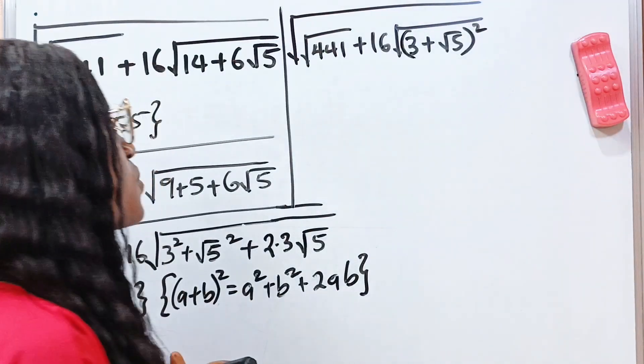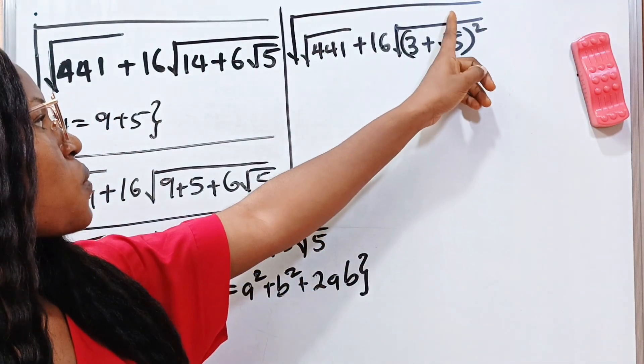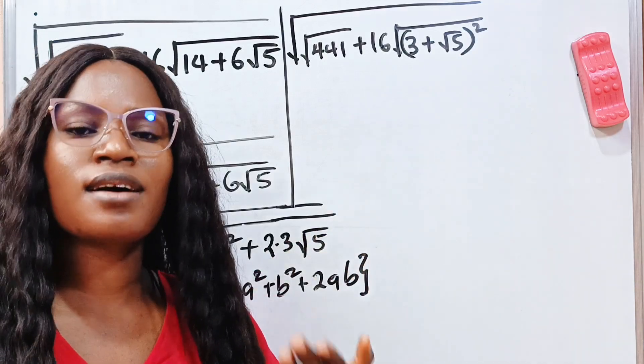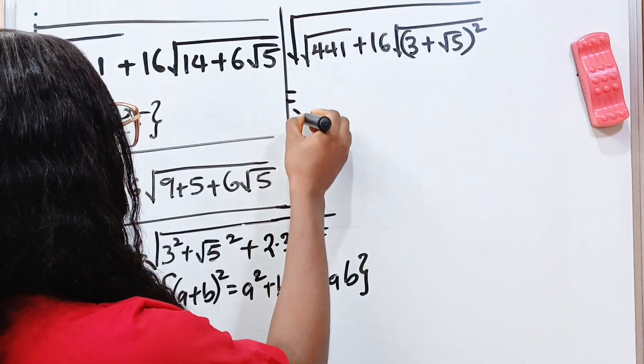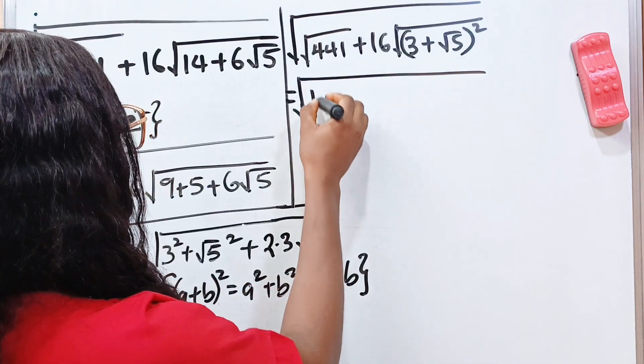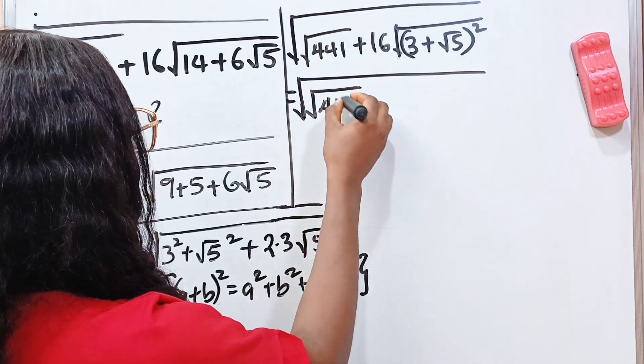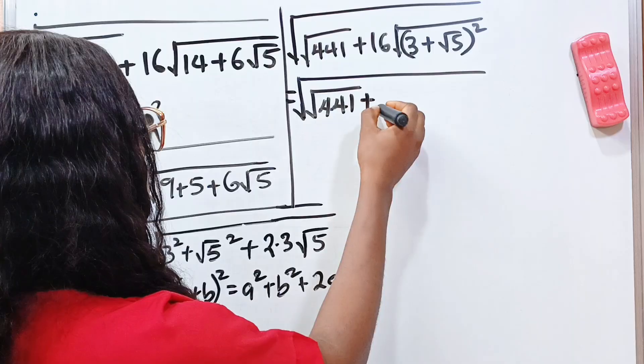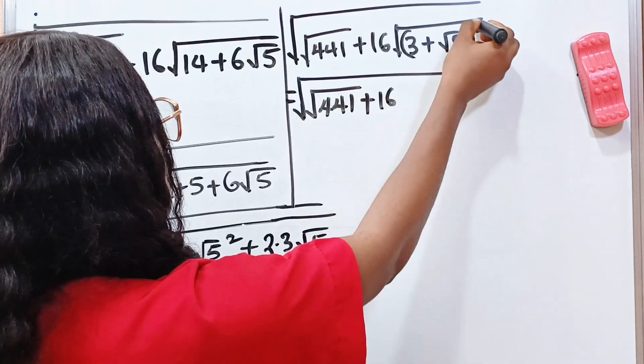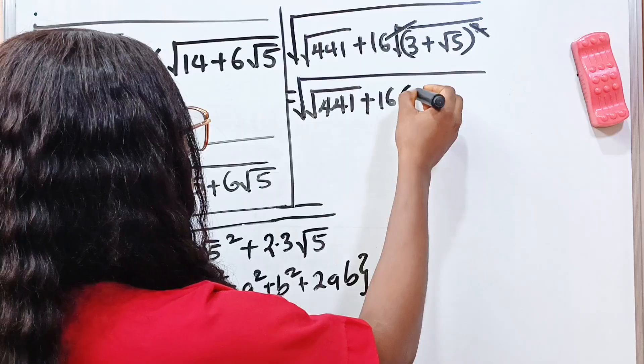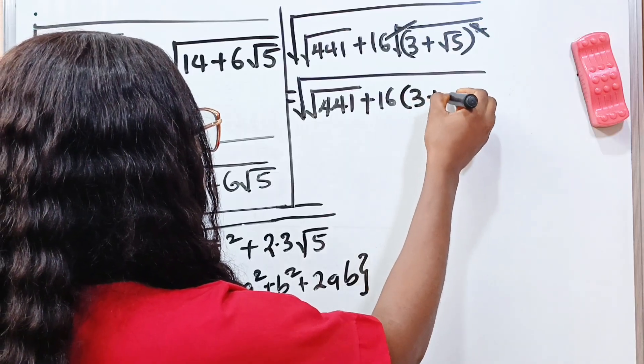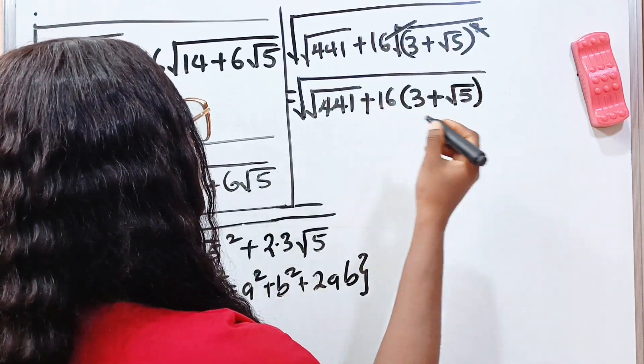That way we will be able to remove this square root sign and we are getting closer to our solution. Amazing, right? So this is equal to the square root of the square root of 441 plus 16. Now root will remove your square. So we have 16 multiplied by 3 plus root 5.